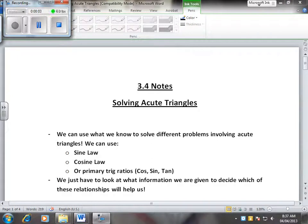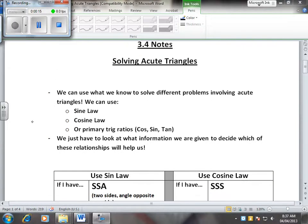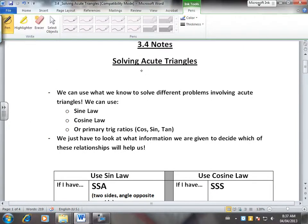So this is our last section for chapter 3, and next week we'll be working on chapter 4, and that's the end of the trigonometry unit. This section, we're just going to go over what we've learned about solving acute triangles. Remember that acute triangles have 3 angles less than 90 degrees.